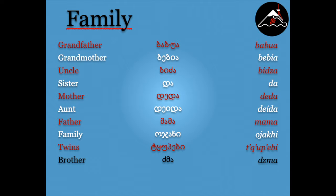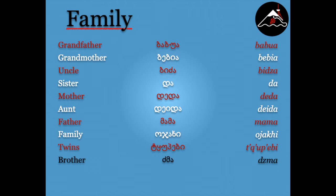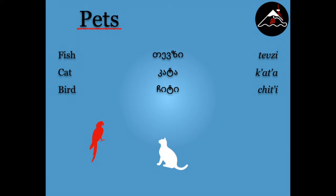Chbabueni, Zma. And for those who have pets: Fish - Tevzi. Cat - Kata. Bird - Chiti.